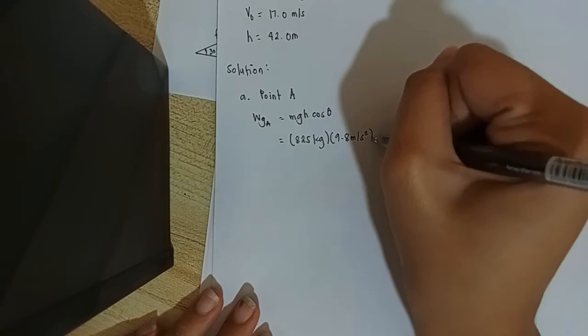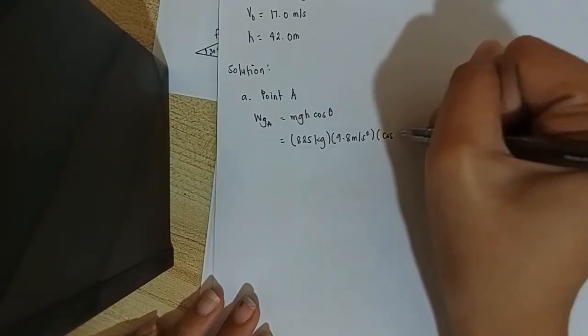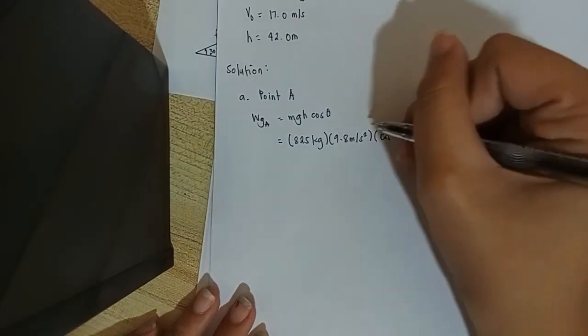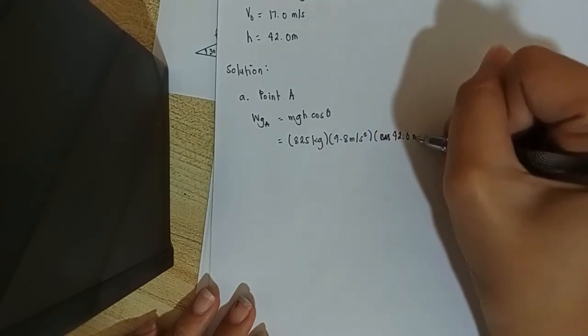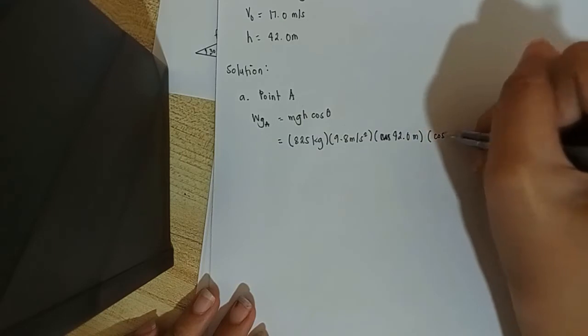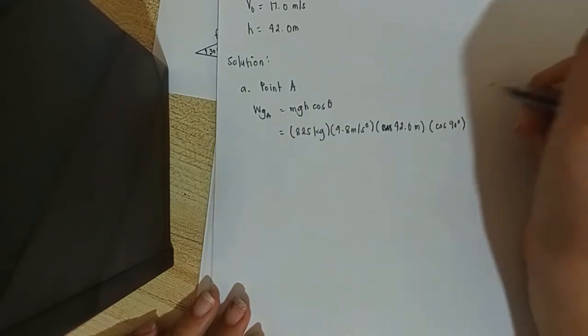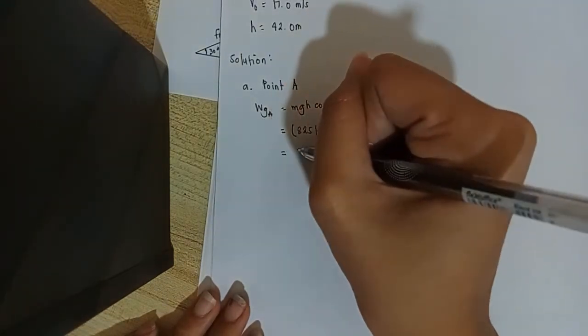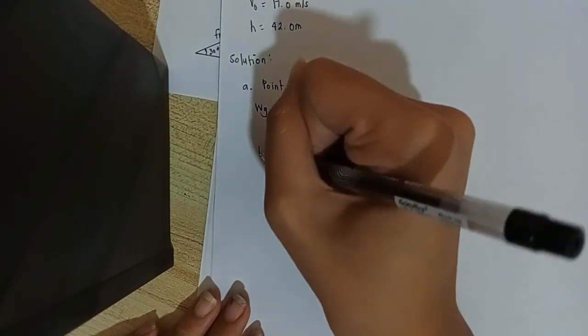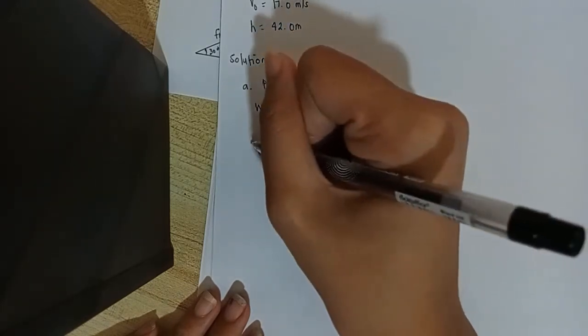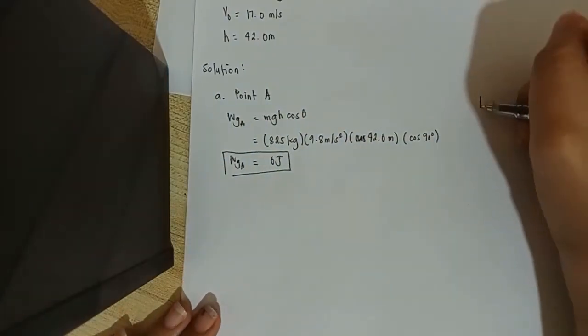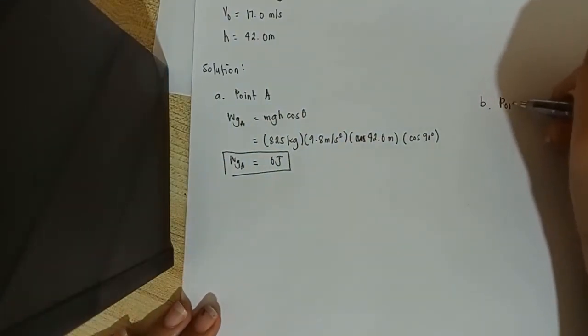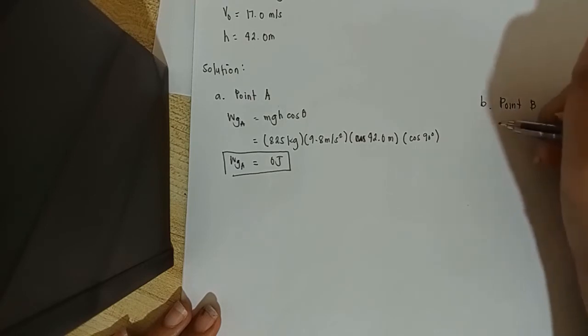Substitution: it will be 8.25 kilograms multiplied by 9.8 meters per second squared, multiplied by 40.0 meters because that's the height, then cos 90 degrees because it's perpendicular as you can see on the diagram. So point A has zero joules.